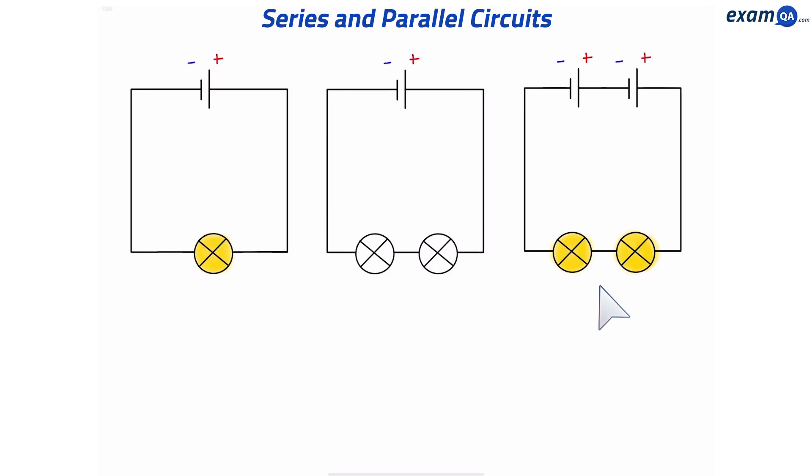And the answer is these two. Okay, let's see what makes these two have equal brightness. Starting with the left, we have one cell and one bulb. On the right, we have two cells and two bulbs, which is the same as saying one cell and one bulb. The one in the middle will be less bright. It has one cell, which is shared between two bulbs. That means each bulb gets less potential difference, or less voltage. And therefore, they will be dimmer.